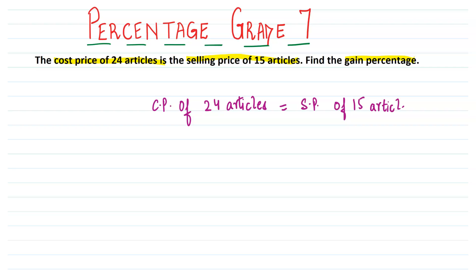So here we have to assume something. So let's assume that the cost price of one article is rupee 1. So the moment we assume this, we can find out the cost price of 15 articles. That would be equal to rupees 15.